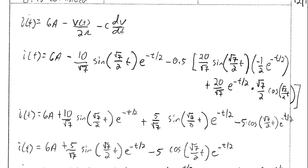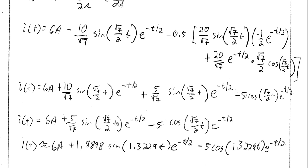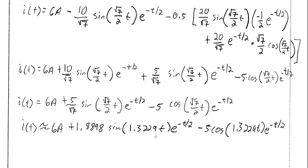After simplifying, the final expression for I(t) is six amps minus 1.8898·sin(√7/2·t)·e^(−t/2) minus 5·cos(√7/2·t)·e^(−t/2). Be careful to watch for sign changes in this derivation. This is how you solve for I(t) for this circuit.